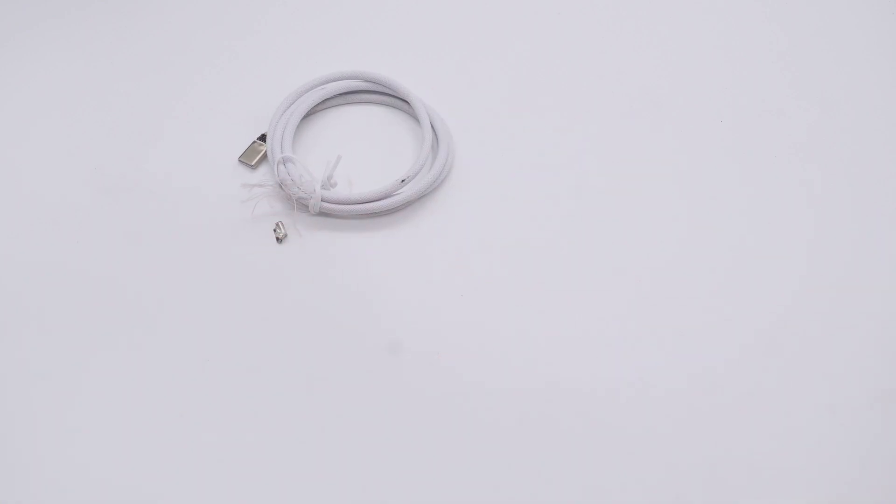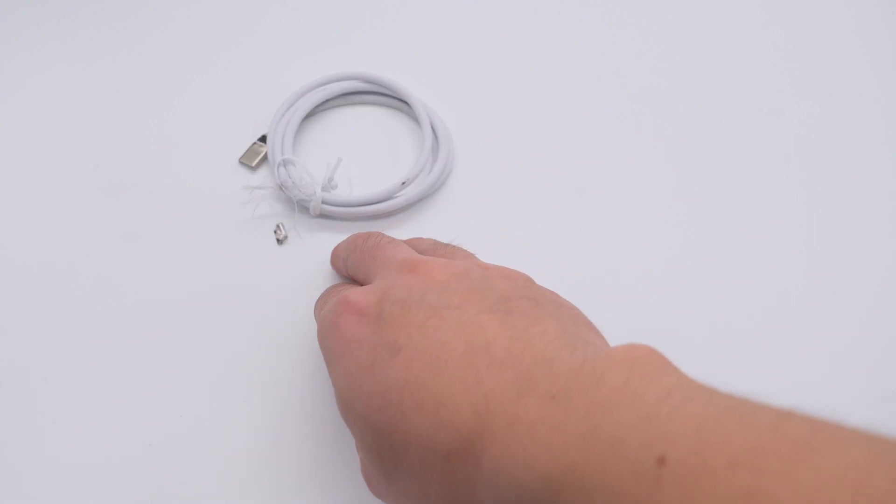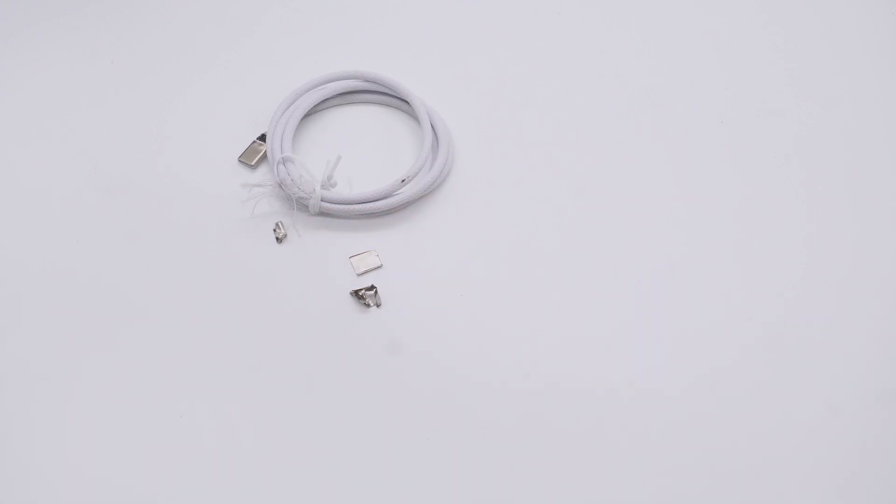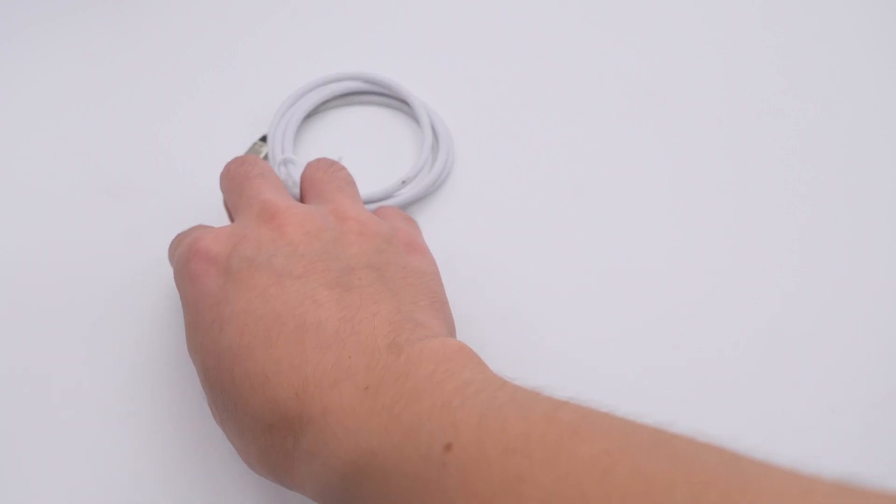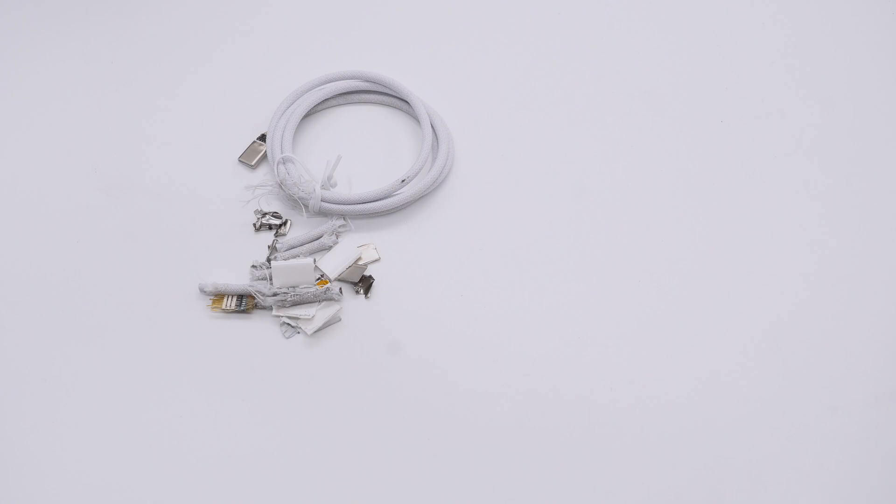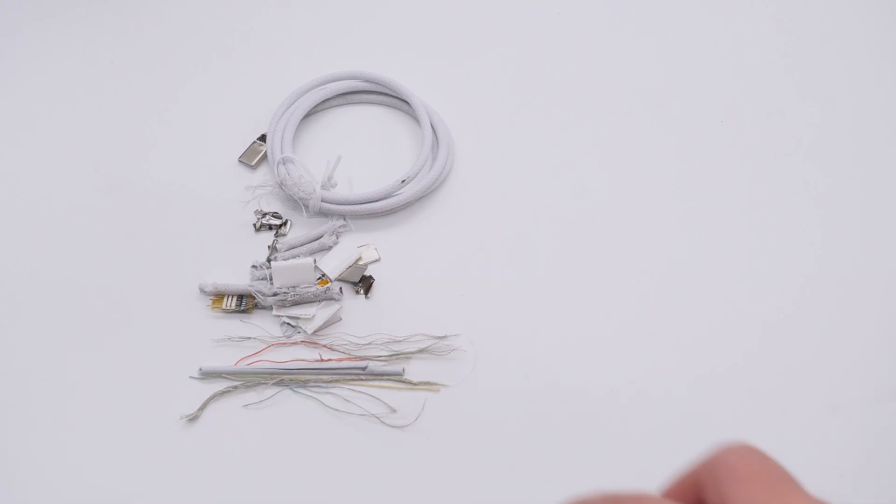Compared to its previous generations, the woven design makes it more durable. After taking it apart, we found it lacks an e-marker chip and an aluminum foil layer compared to the Apple 240W cable. So, the maximum power can only reach 60W, and the cost will be lower.